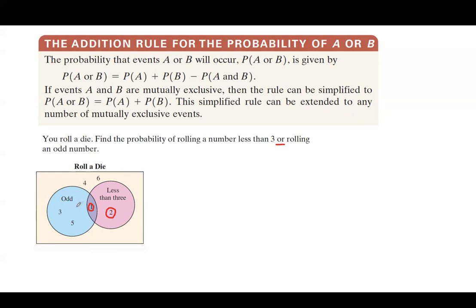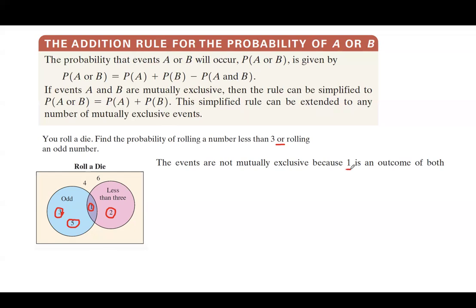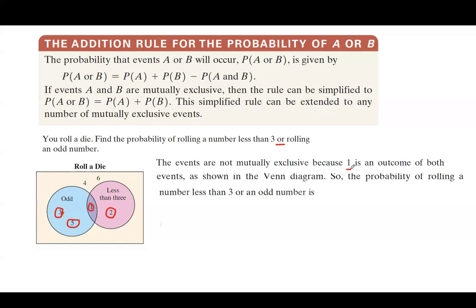When it comes to odd numbers you have 1, 3, and 5, but as you can see, one number lands in both sets — the intersection. So these two events are not mutually exclusive. The probability of rolling a number less than 3 or an odd number equals the probability of less than 3 plus the probability of odd minus their intersection.